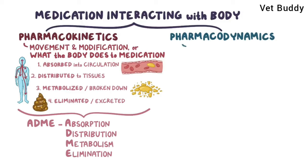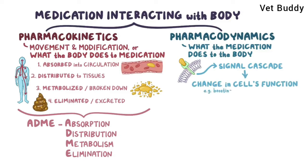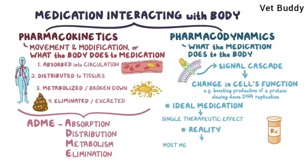Pharmacodynamics, on the other hand, refers to what the medication does to the body. After administration, the medication binds to receptors or specialized proteins located on the surface or inside a cell. This gives rise to a signal cascade, which ultimately results in some change in the cell's function, like boosting the production of a particular type of protein or slowing down DNA replication. An ideal medication would produce a single, beneficial therapeutic effect, but in reality most medications produce several unwanted effects called side effects, such as nausea or fatigue.